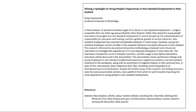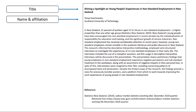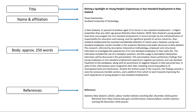A conference abstract looks like this. Each conference sets its own formatting rules, but most require a title, your name and affiliation — unless the abstract is to be anonymously reviewed — approximately 250 words of text, and references for any sources cited. In some cases, your abstract may require other elements as well, depending on the conference organisers' instructions.